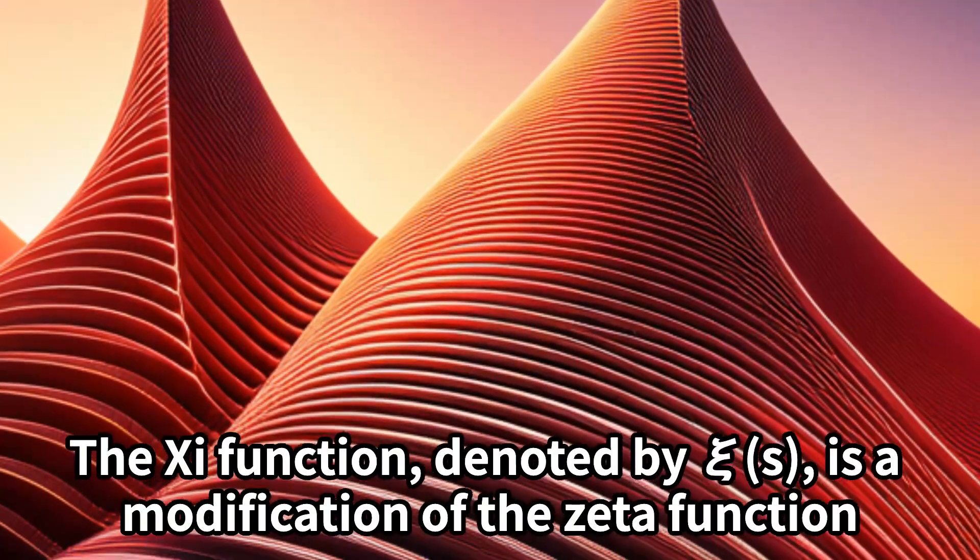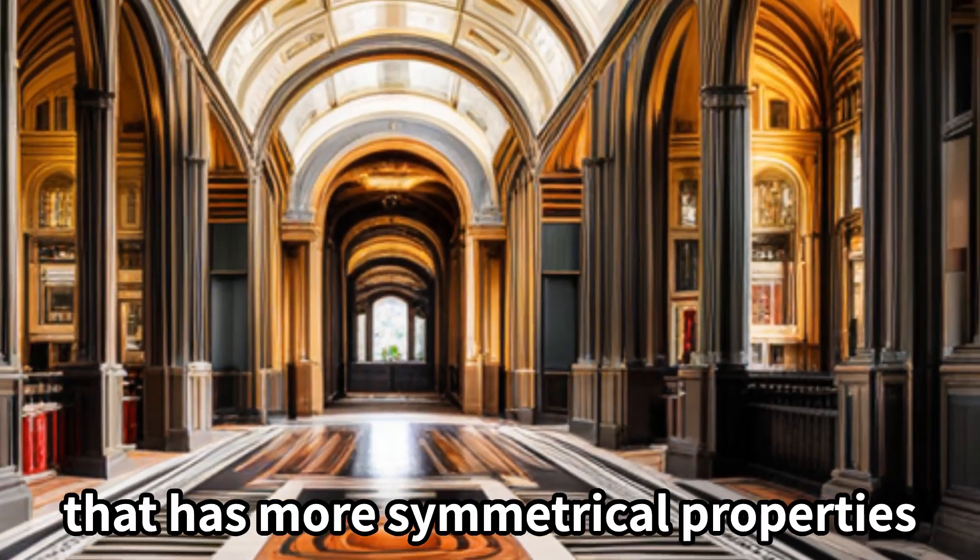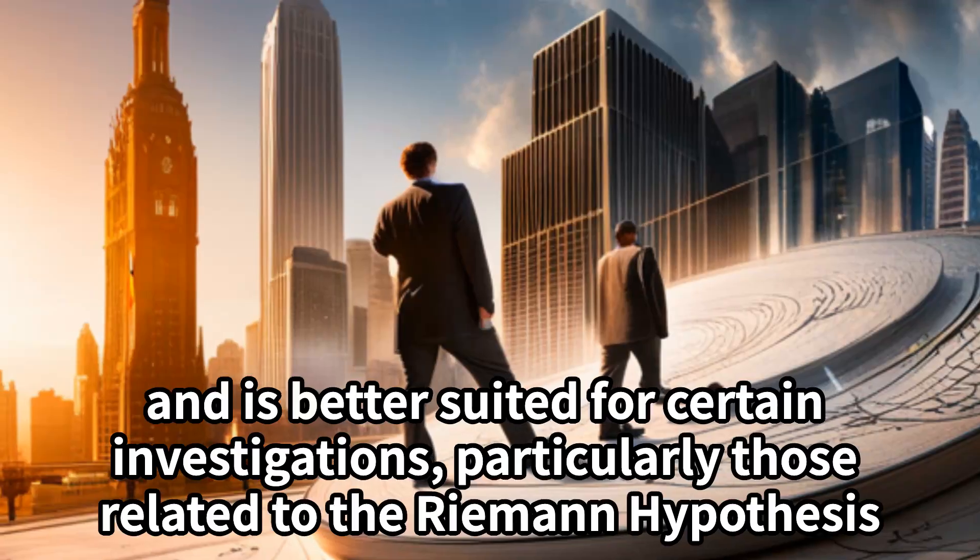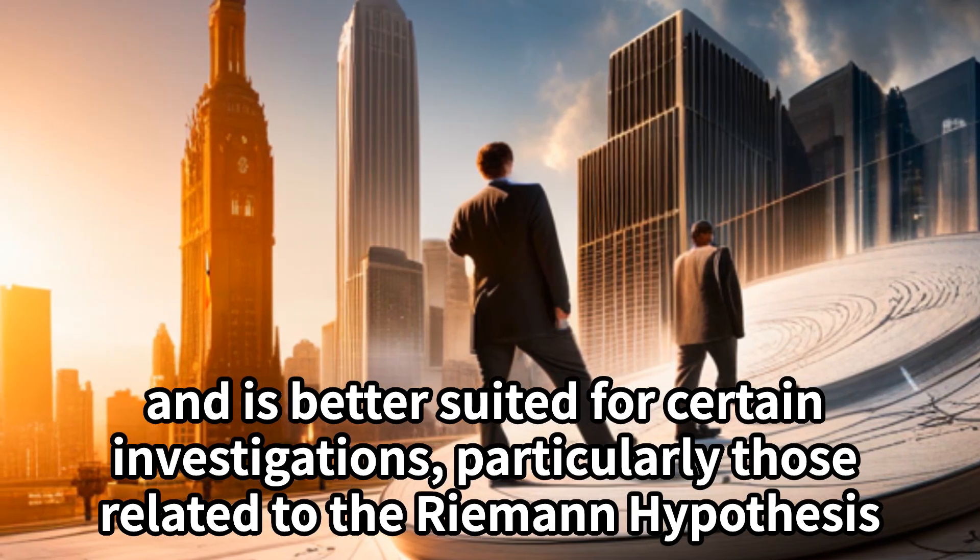The Chi function, denoted by ξ(s), is a modification of the Zeta function that has more symmetrical properties and is better suited for certain investigations, particularly those related to the Riemann hypothesis.